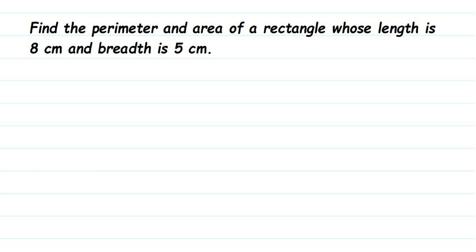Hey everyone, here's a question: Find the perimeter and area of a rectangle whose length is 8 cm and breadth is 5 cm. They have given the length of the rectangle, which is 8 cm, and the breadth of the rectangle, which is 5 cm, and what we have to find out.